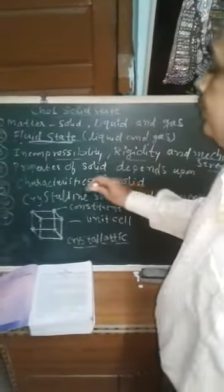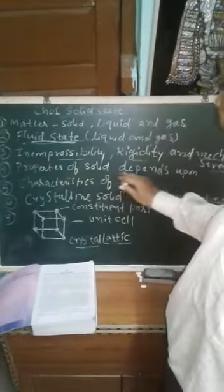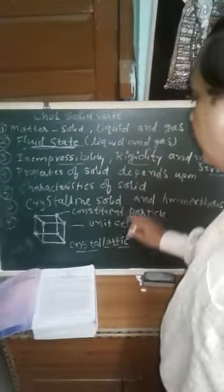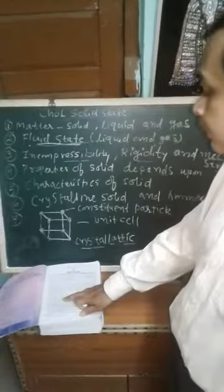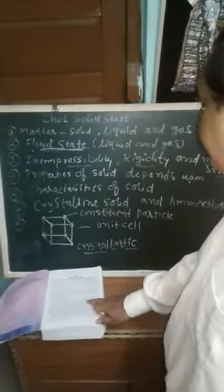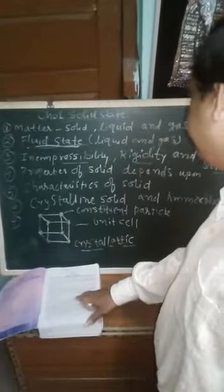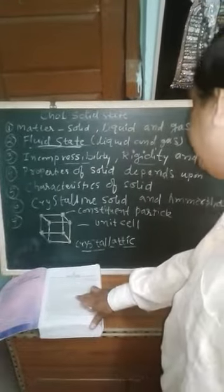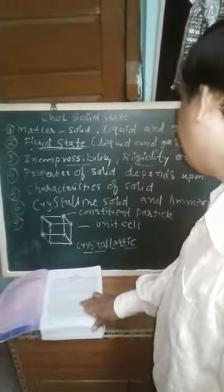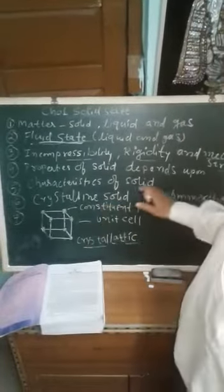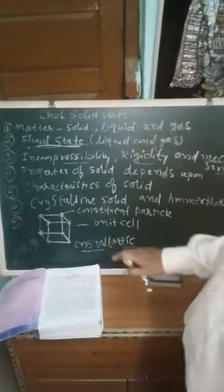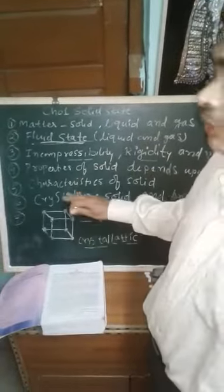Next topic is how the properties of solid depend upon certain factors. Properties of solid depend on factors: first is nature of the constituent particles, second is mechanical strength, and third is the attractive force existing between them. In this way the properties of solid depend on these factors.